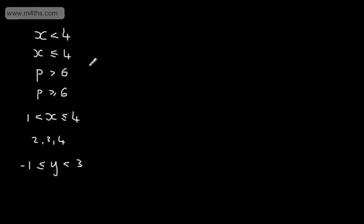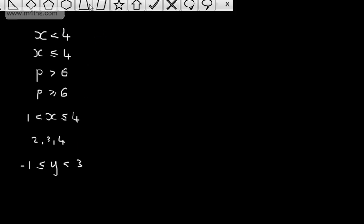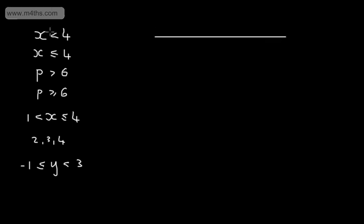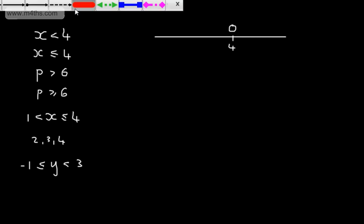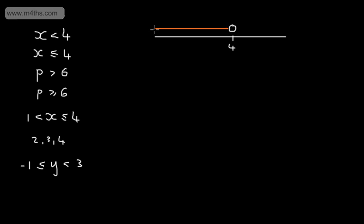We could show these on a number line. If we have a strict inequality, we use an open dot. What I'm going to do here is draw up a number line. If I wanted to show x is less than 4 on a number line, all I would do is locate 4, put an open dot — as this is a strict inequality and it doesn't include 4 — and have all numbers to the left. The arrow is pointing left, so it's all numbers smaller than 4.